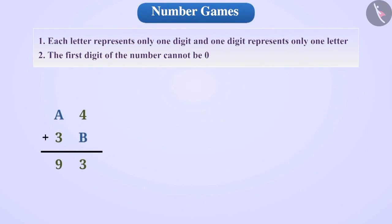You must have seen the following types of puzzles in newspapers or magazines. Let's learn how to solve them. To solve these, we have to follow two rules. First, each letter represents only one digit and one digit represents only one letter. Second, the first digit of the number cannot be 0.